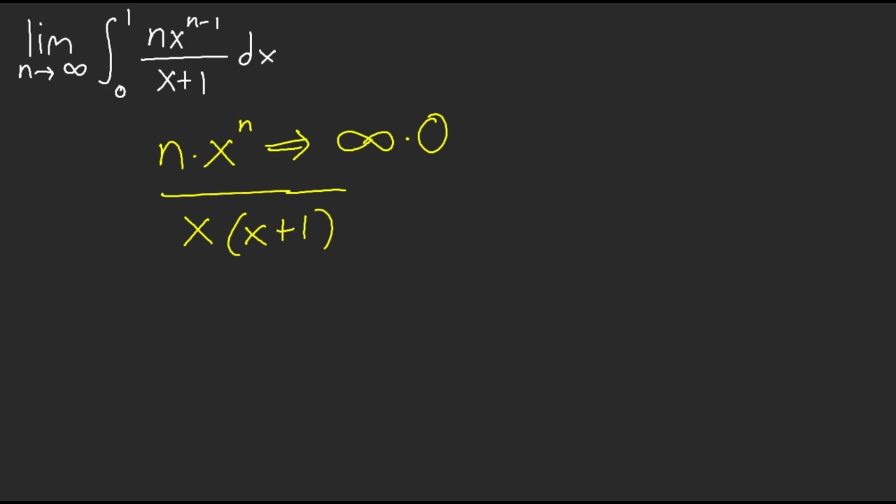So how on earth are you going to handle that? Well, one way is to do L'Hôpital's rule — you could do that, right? From x negative n. But good luck, because it's not pretty. I think you might end up in an infinite loop here. So probably not a good idea.